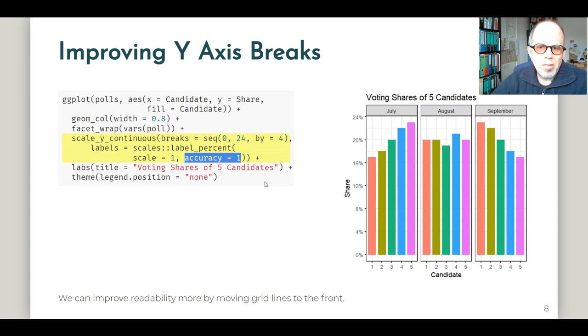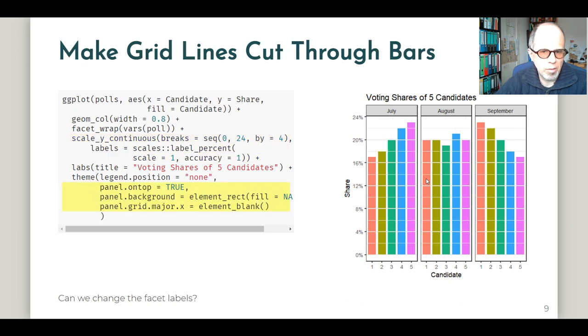Okay, I think readability is still a bit hard as we move to the panels on the right. For example, in September, we're quite far away from the y axis labels. And now percentages are maybe not easy enough to read. So what else can we do to improve on readability? And my suggestion would be to move the grid lines to the front. And this is how we can do that.